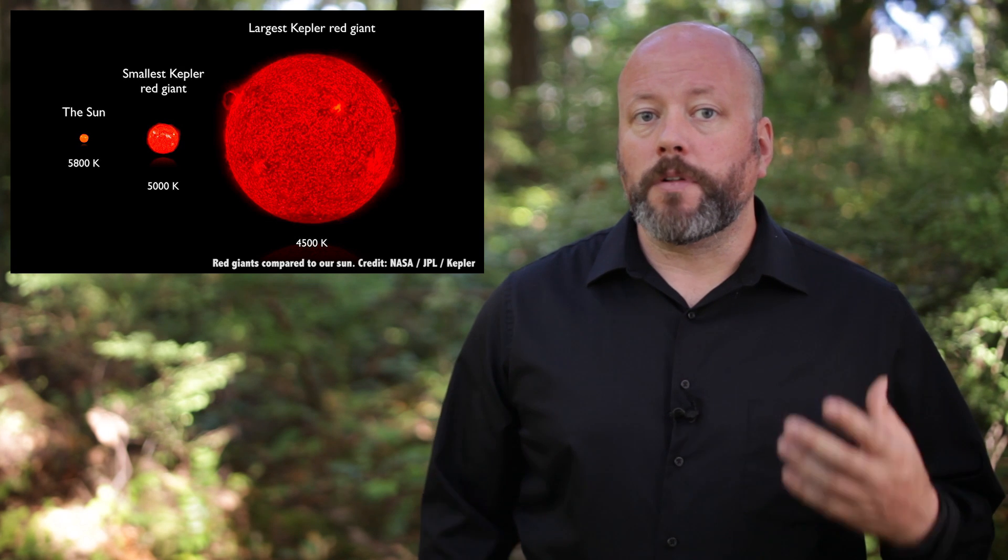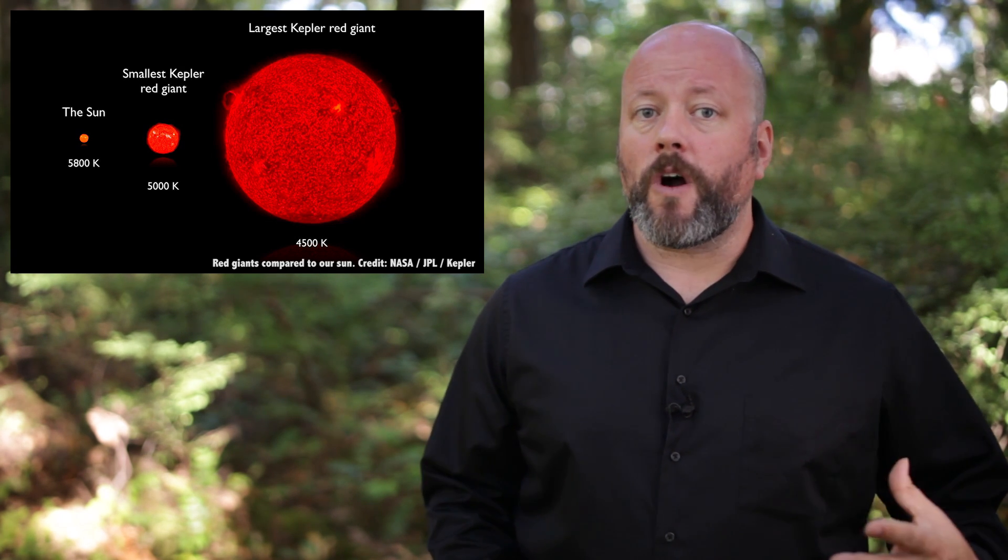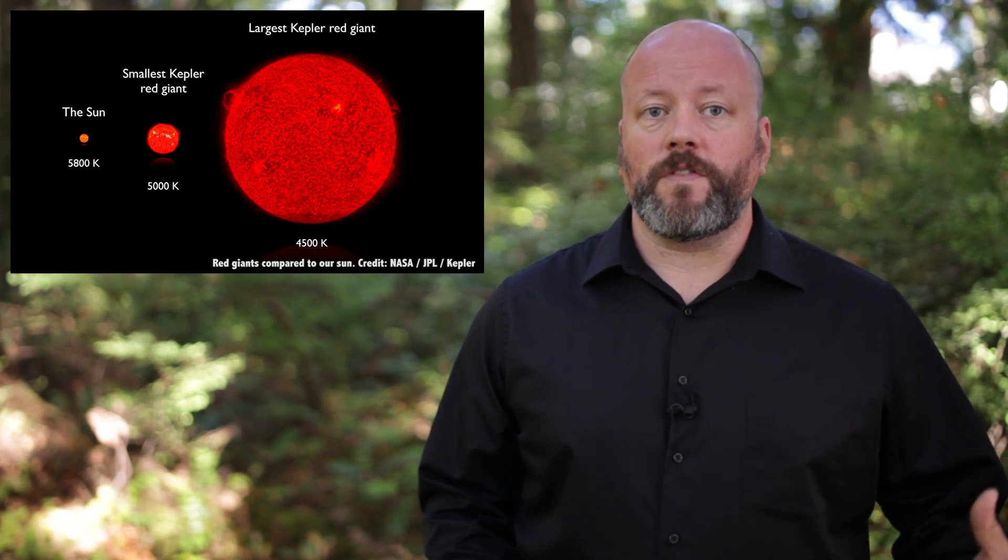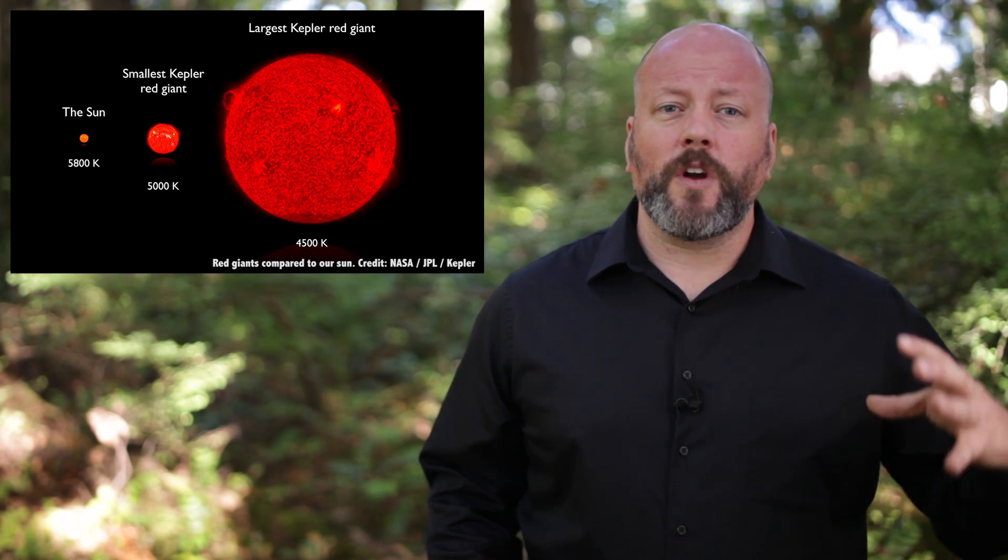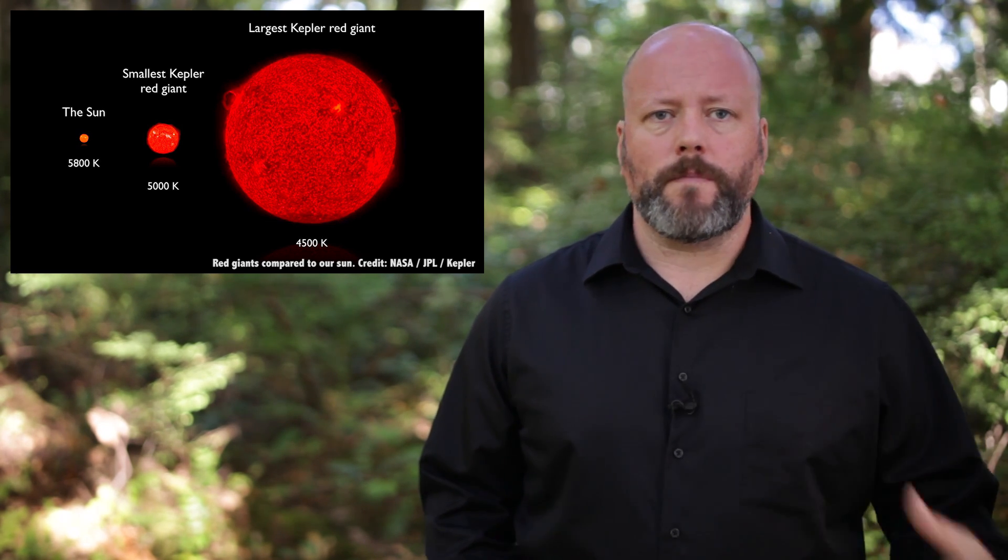At the end of its life, it's going to bloat up as a red giant, so large that it consumes Mercury and Venus, and maybe even Earth. What's the process going on inside the Sun that makes this happen?